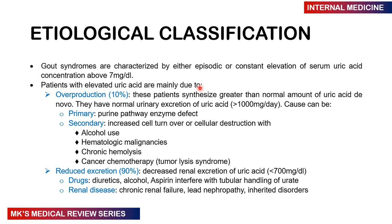What causes gout? These syndromes involve episodic or constant elevation of serum uric acid levels greater than 7 mg/dL, resulting from two main things. First is overproduction — synthesizing greater than normal amounts of uric acid — where patients excrete greater than 1000 mg per day in urine. This could be primary gout (a purine pathway enzyme defect) or secondary gout due to increased cell turnover, such as alcohol use, hematological malignancies, chronic hemolysis, or chemotherapy (tumor lysis syndrome). Second is reduced excretion of uric acid from the kidneys, where urinary excretion is less than 700 mg per day.